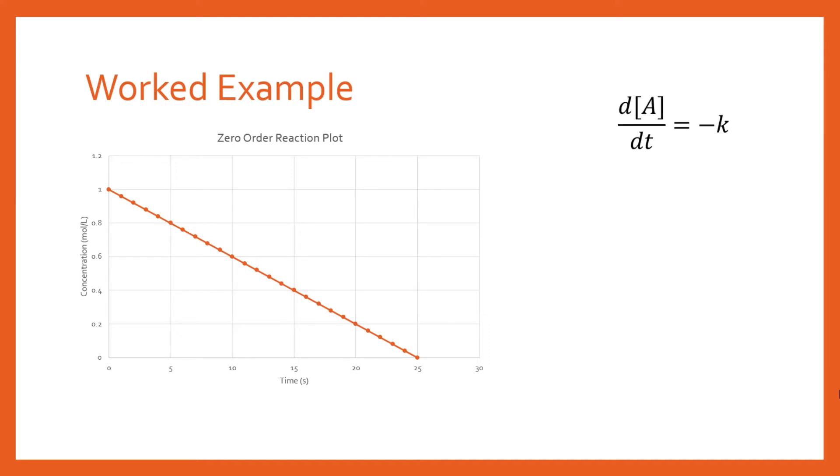The fundamental definition is that the derivative of the concentration of reactant A with respect to time is minus k, where k is the rate constant. So d[A]/dt = -k.